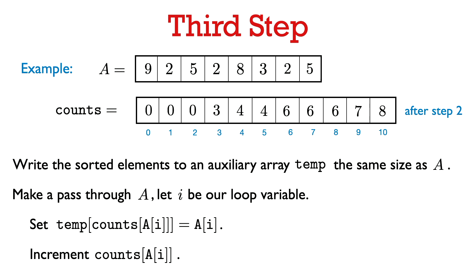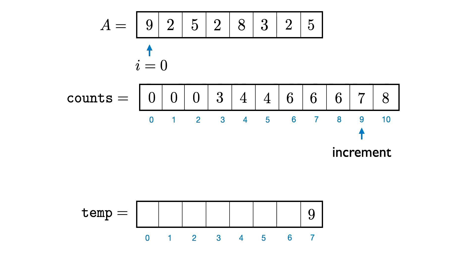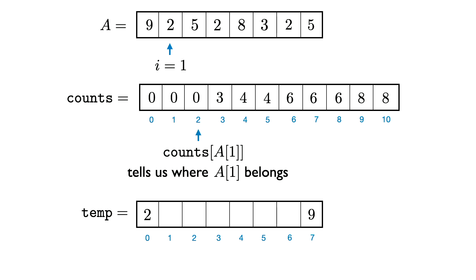Let's look at an example. We make a forward pass through A with i as the loop variable. A[0] is 9, so we look at counts[9], which is 7. That tells us where 9 should go in sorted order, so we write 9 to entry 7 in temp. Then we increment counts[9], so it goes from 7 to 8.